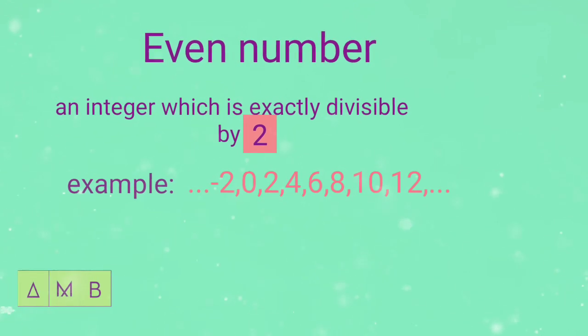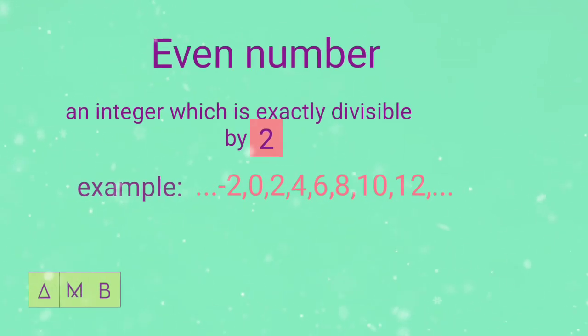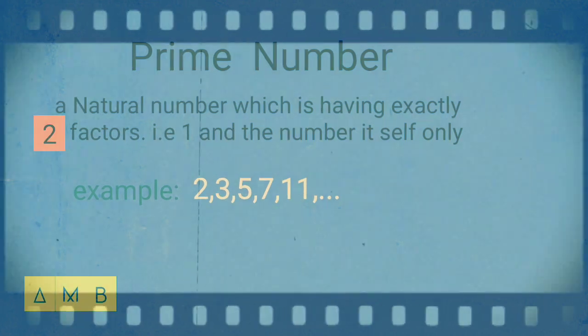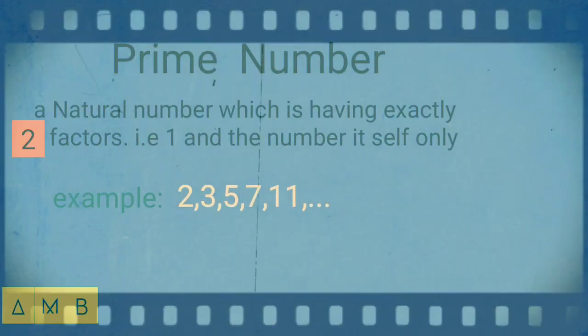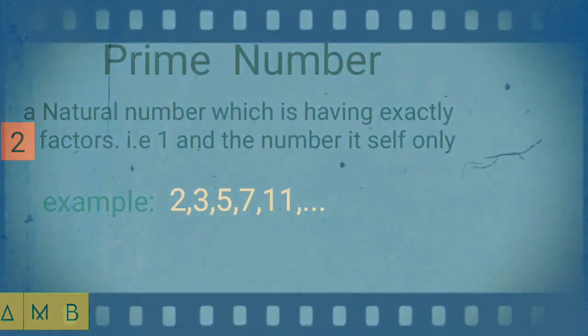Examples: -2, -4, and so on; 0, 2, 4, and so on. Prime number is a natural number which is having exactly two factors, that means 1 and the number itself only.